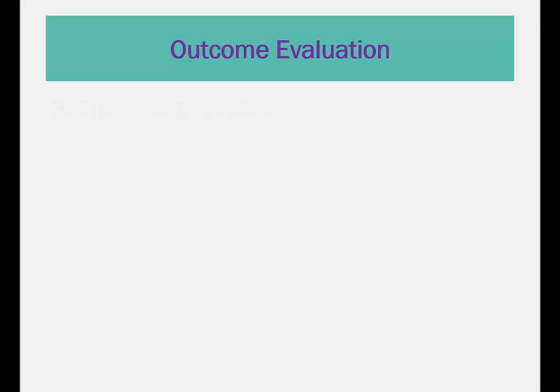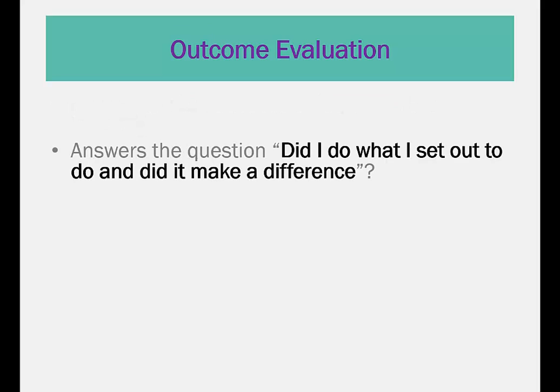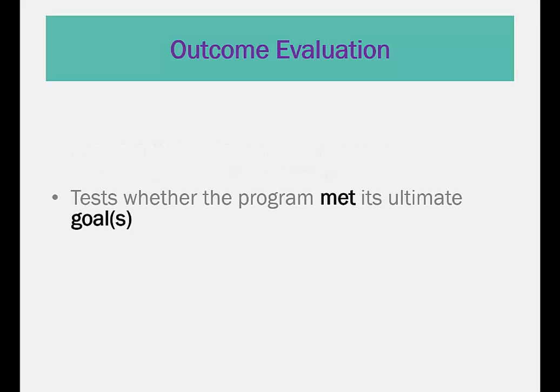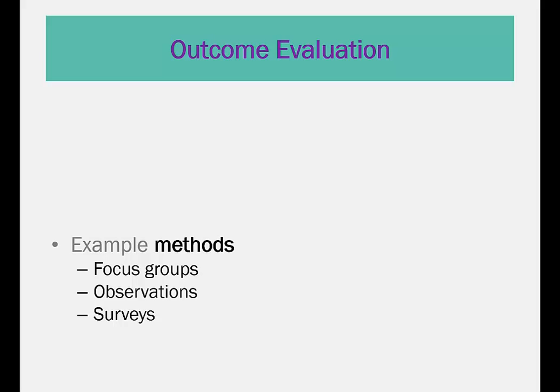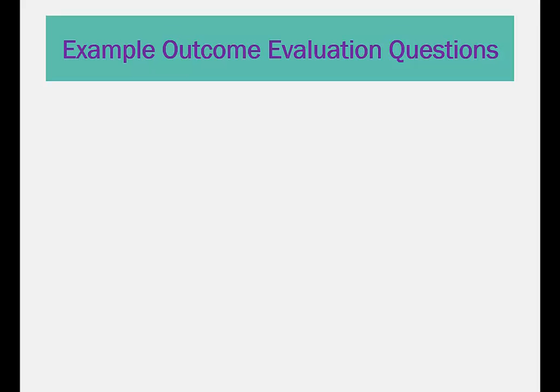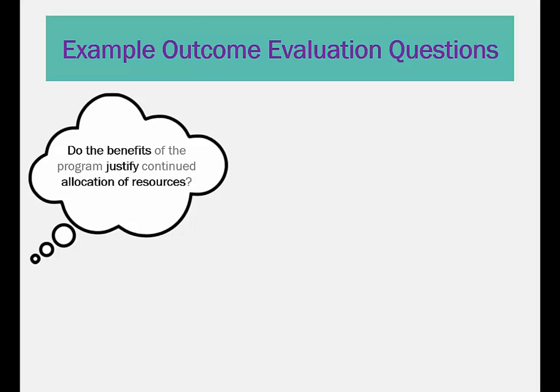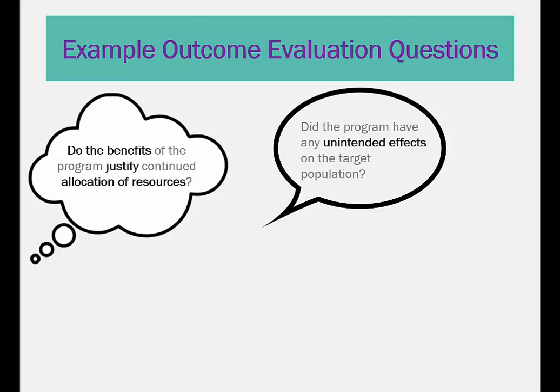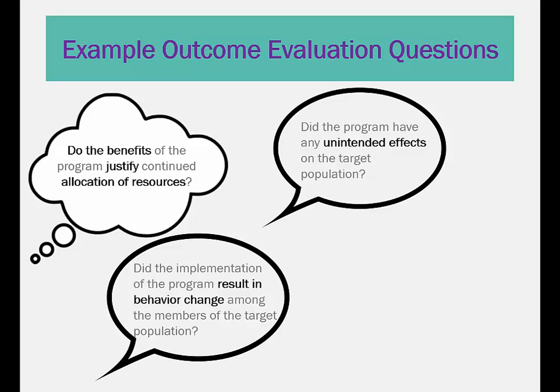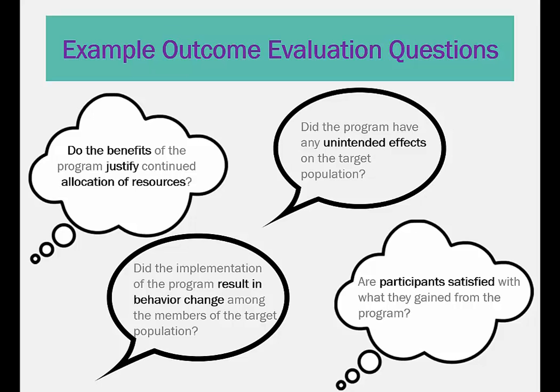The last type of evaluation is outcome evaluation. Outcome evaluation focuses on the success or impact of the initiative, and typically answers the question: Did I do what I set out to do, and did I make a difference? Outcome evaluation tests whether the program met its ultimate goal and objectives. Example methods include focus groups, observations, and surveys. Questions might include: Do the benefits of the program justify continued allocation of resources? Did the program have any unintended effects on the target population? Did implementation result in behavior change? Are participants satisfied with what they gained?